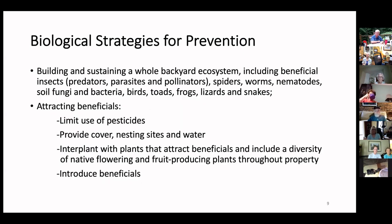Biological strategies for prevention are important for building and sustaining whole backyard ecosystems, including beneficial insects, predators, parasites, pollinators, spiders, worms, beneficial nematodes, beneficial soil fungi and bacteria, birds, toads, frogs, lizards, and snakes. Snakes are really good on voles and moles. There are beneficial soil fungi and bacteria, and you can get amendments to put in the soil — beneficial bacteria help break down soil components into nutrients that plants can take up.